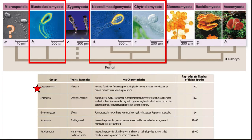The groups are named for their reproductive structures. The Microsporidia are basically animal parasites, and it's debatable whether they are a protist or a fungi. The learning objectives actually call it a protist, not a fungus — yet they include it in the fungi chapter.